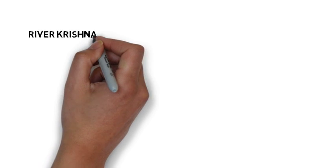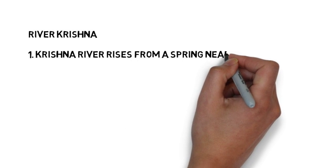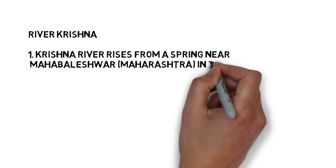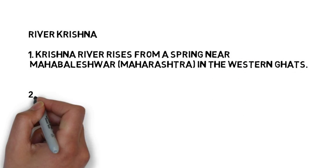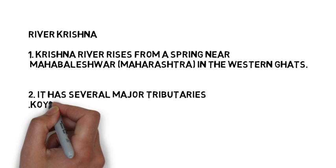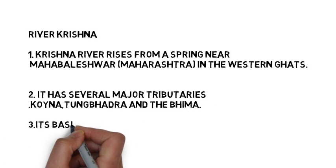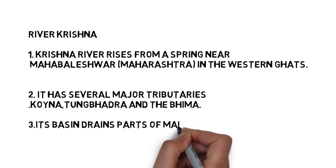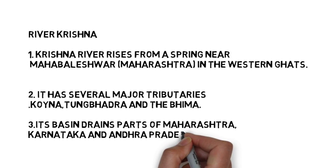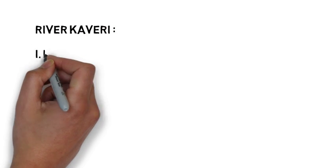Another important river is the river Krishna. The Krishna rises from a spring near Mahabaleshwar in the Western Ghats of Maharashtra. We have now read about two rivers originating in Maharashtra: Godavari arising in Nasik district and Krishna arising near Mahabaleshwar. Krishna has several major tributaries: Koena, Tungabhadra, and Bhima. The river Krishna drains parts of Maharashtra, Karnataka, and Andhra Pradesh. Keep the map in front of you and try to map the course of these rivers.